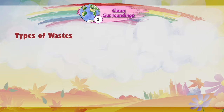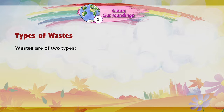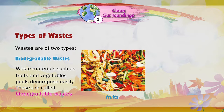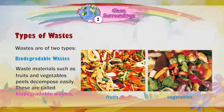Types of waste: Waste materials such as fruits and vegetable peels decompose easily. These are called biodegradable wastes.